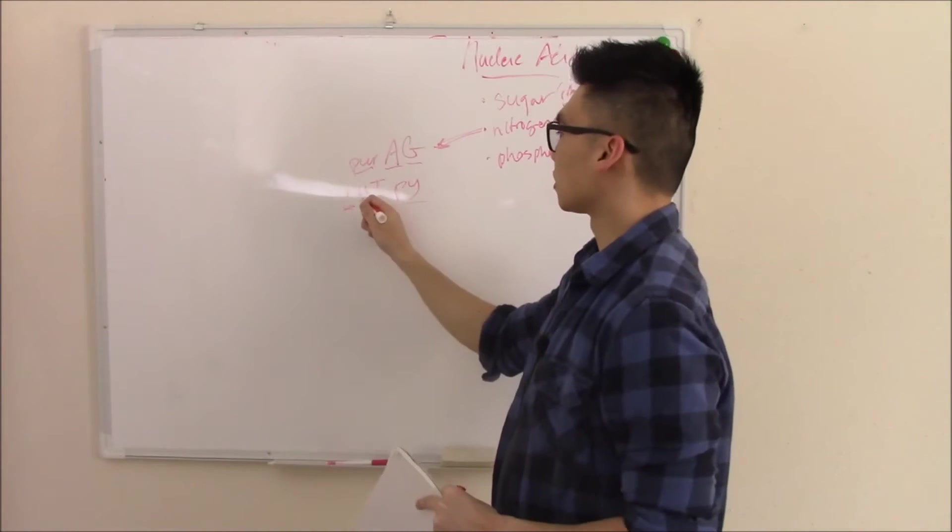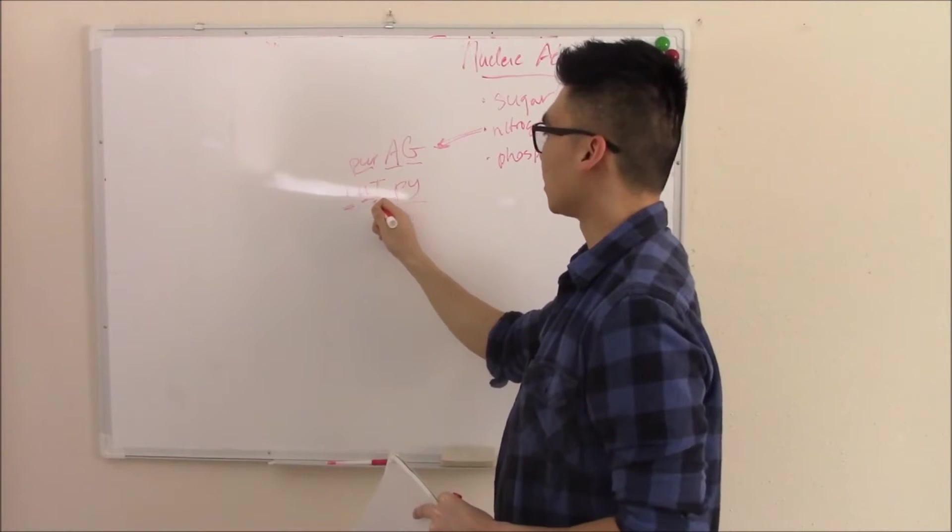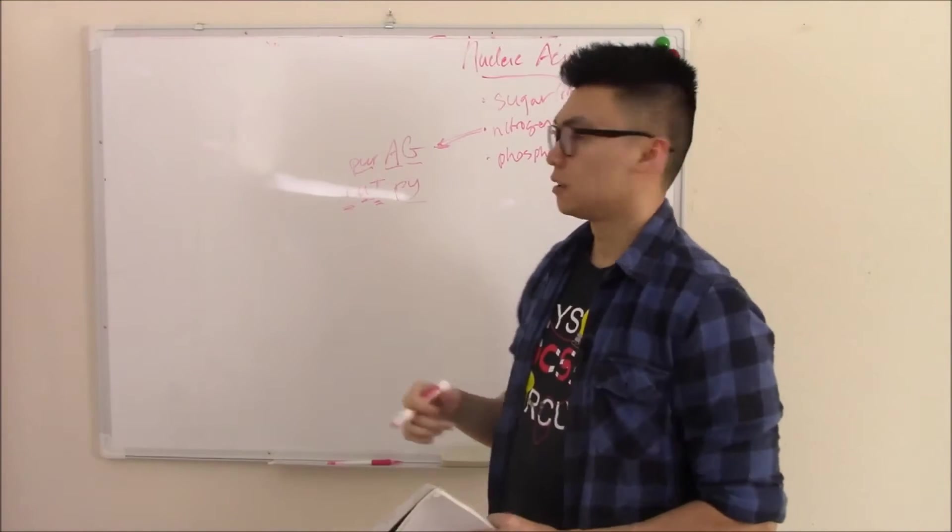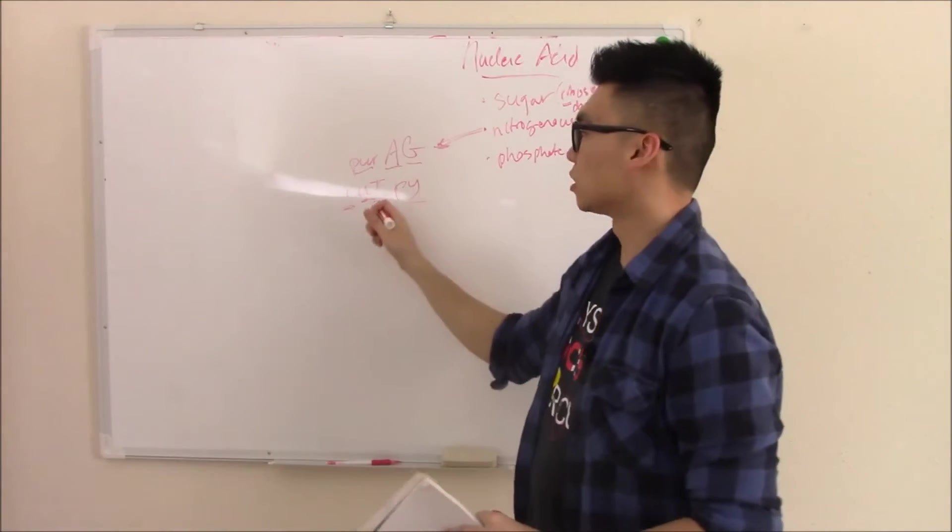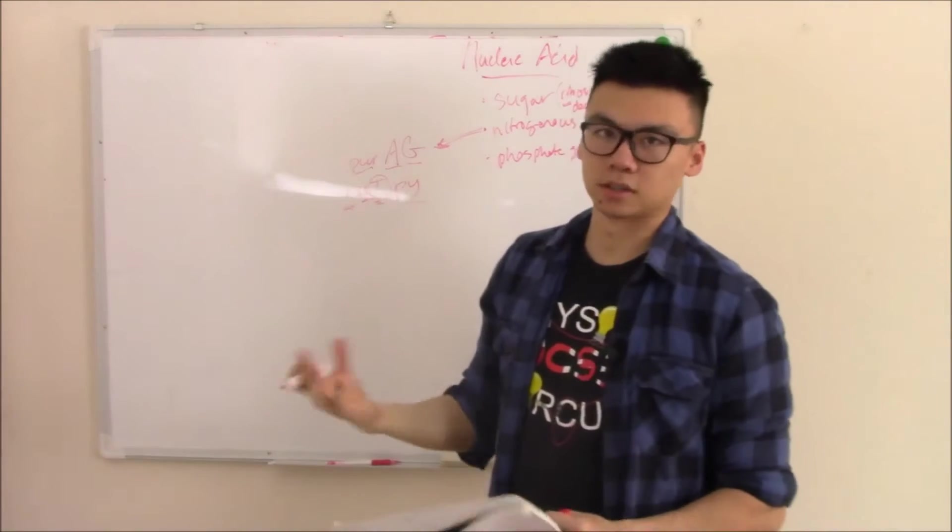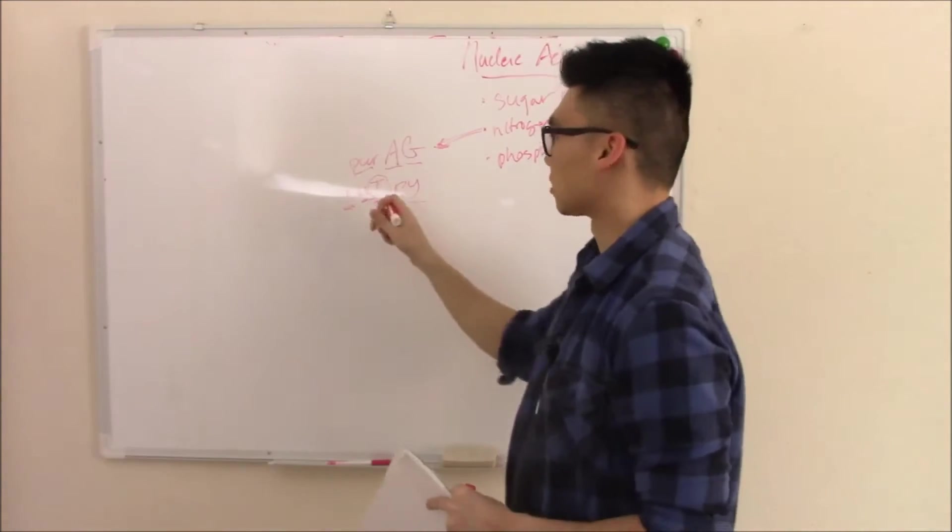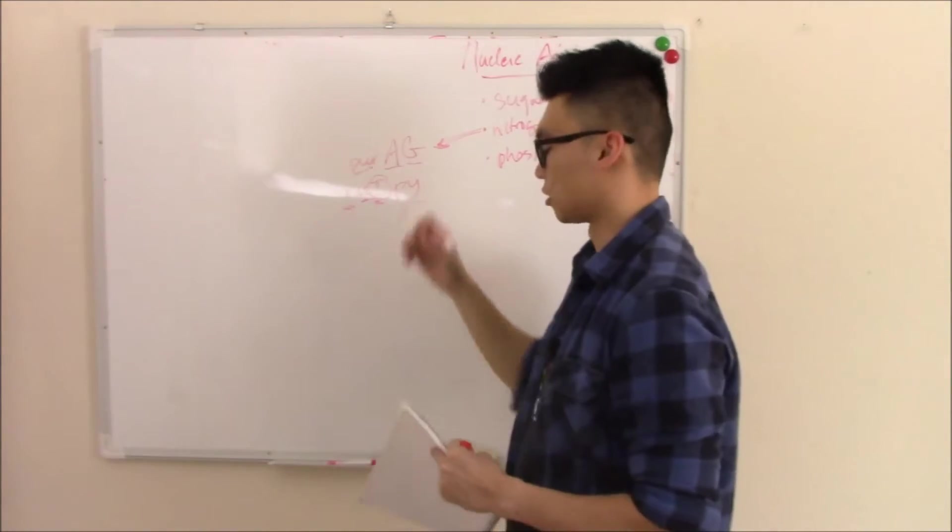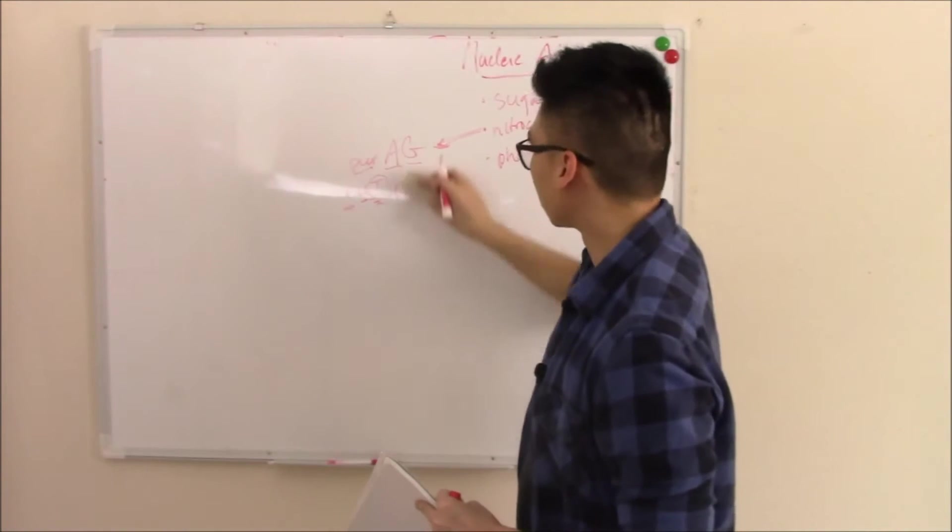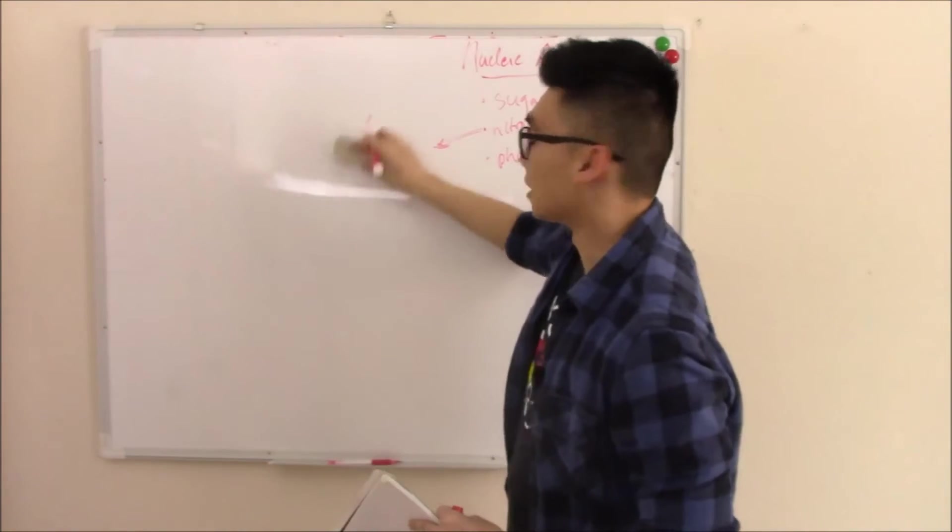Just some basics: uracil is found in RNA, thymine is found in DNA. Structurally they're very similar. If you lose a methyl group from thymine, you make uracil. So it's not some new complicated complex. It's just thymine, lose a methyl group. That's uracil. But I won't go into too much of the basics.